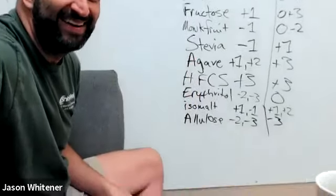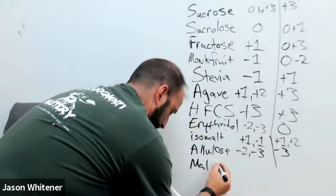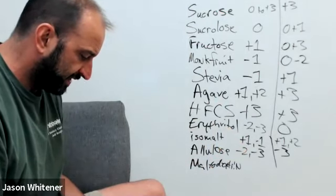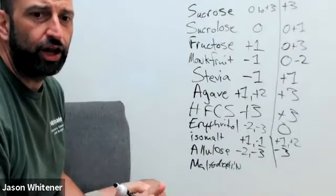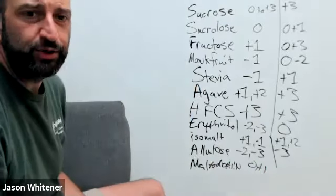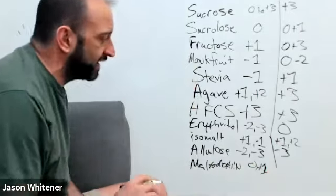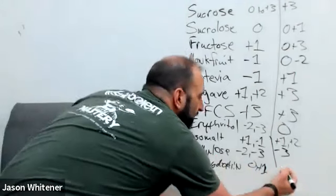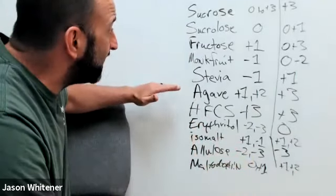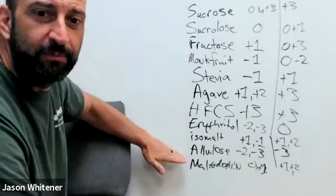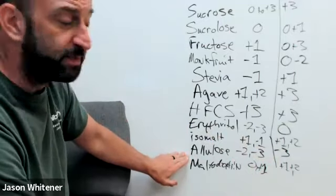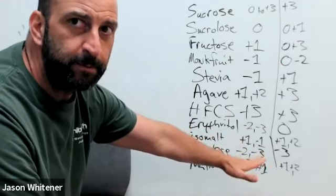And then we've got one more to add. Maltodextrin. Maltodextrin, it's like a starch that's added to things to make it sweeter. You want to look out for maltodextrin. Maltodextrin is a zero to a plus one with a plus one to a plus two effect on your insulin. So look out for it, meaning you may have a relatively healthy monk fruit sweetener, but if it's been combined with maltodextrin, it's going to have the effects of the maltodextrin. If the monk fruit has been added to it, we've got a winning combination.